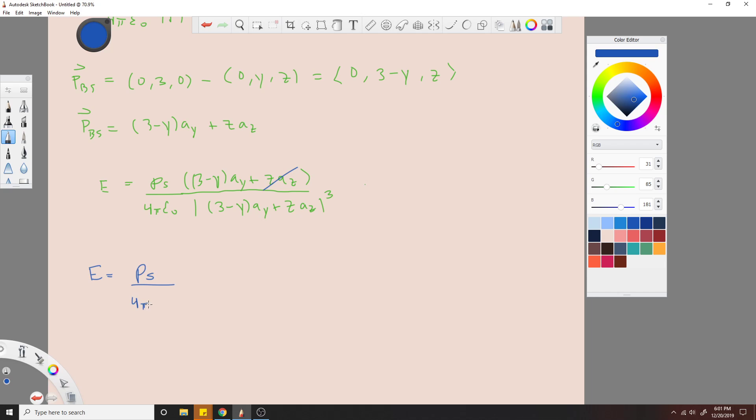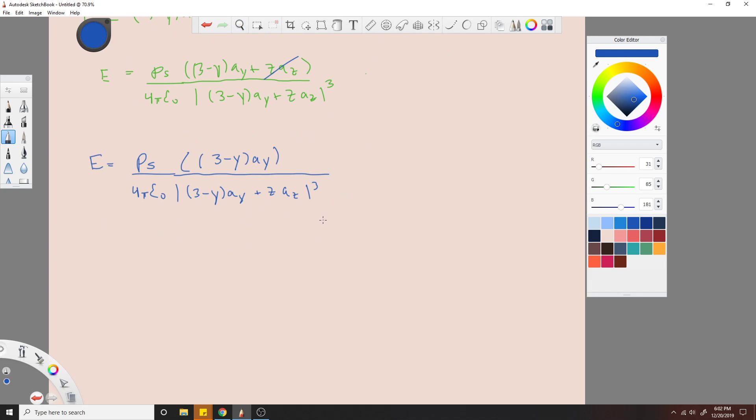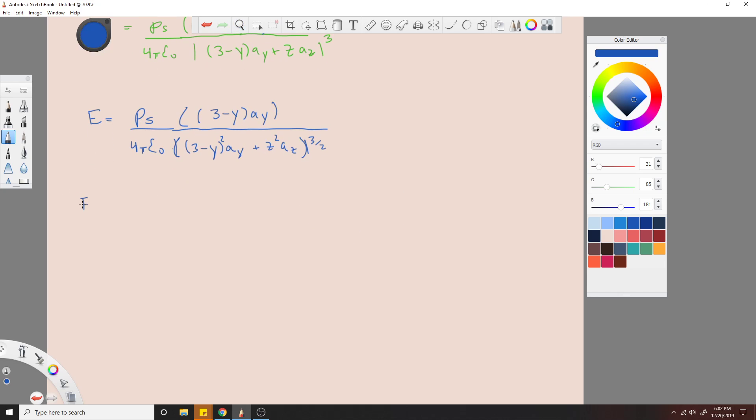So I'm left with E is equal to rho s over 4 pi epsilon naught, 3 minus y ay. Remember this z down here has to stay because you can't just get rid of that part. You could square these, maybe the three halves, but then these would be just not absolute values, look like that. And again you would do your integration from there and then you'd end up with 45 volts per meter.